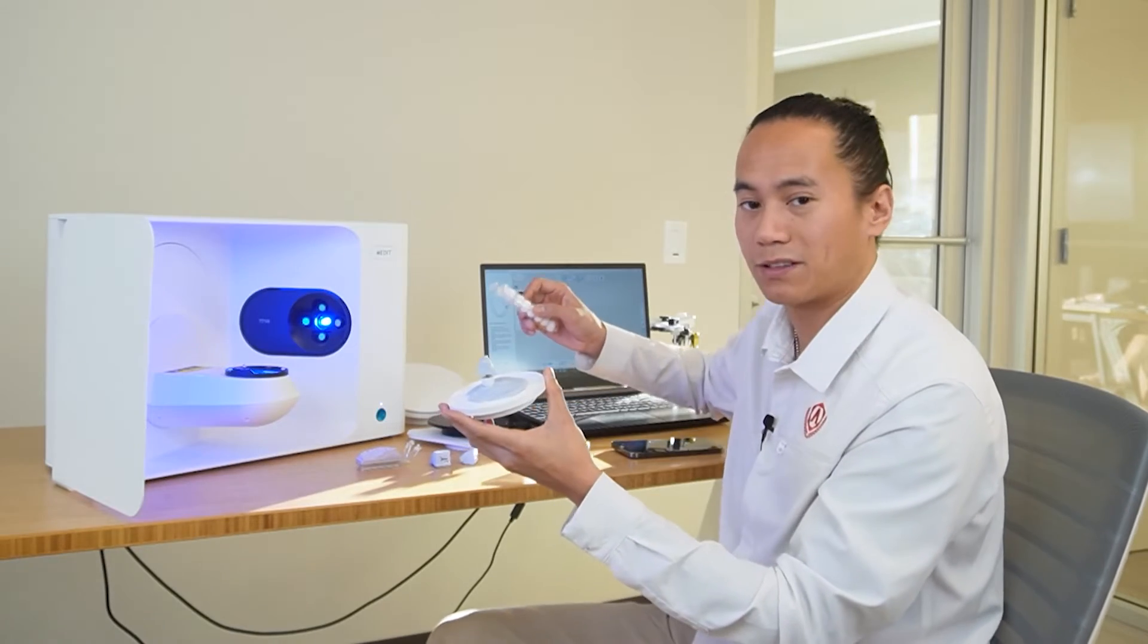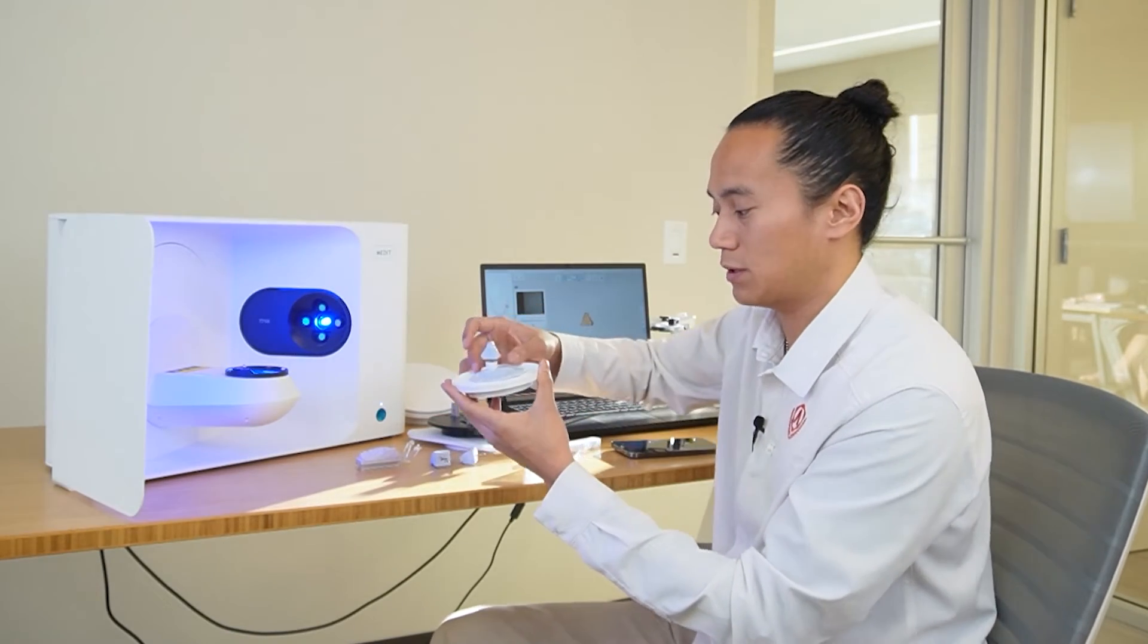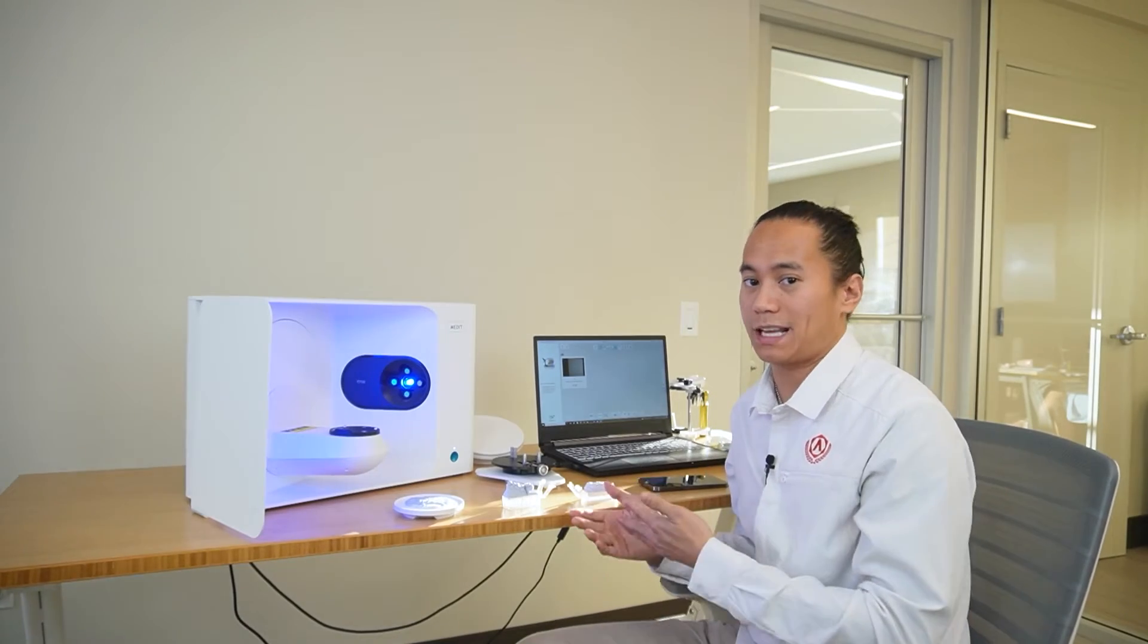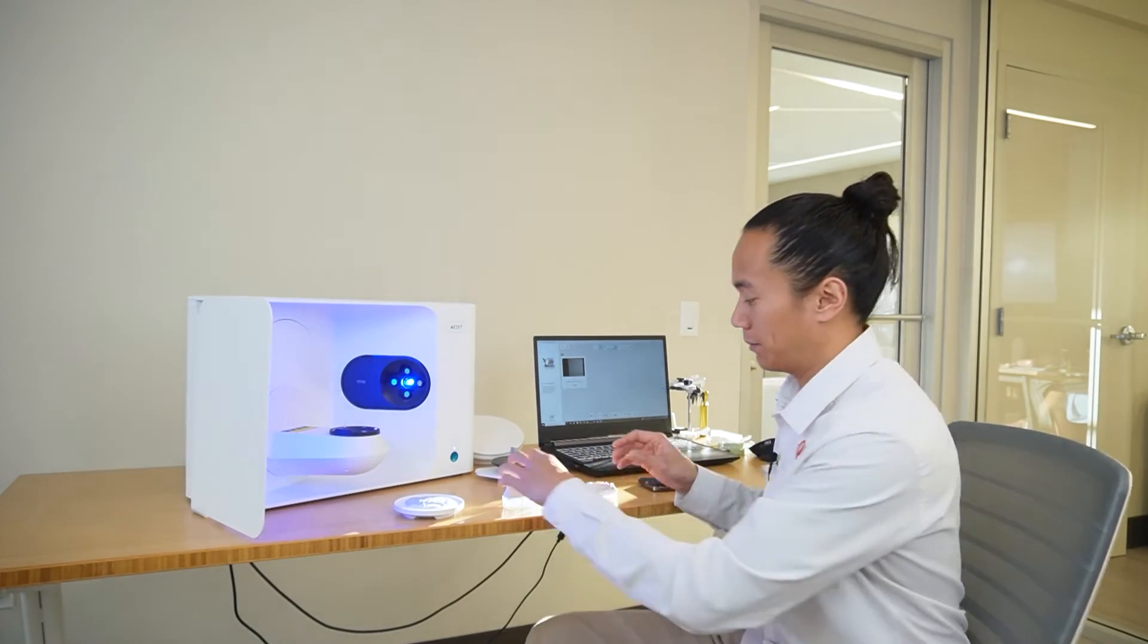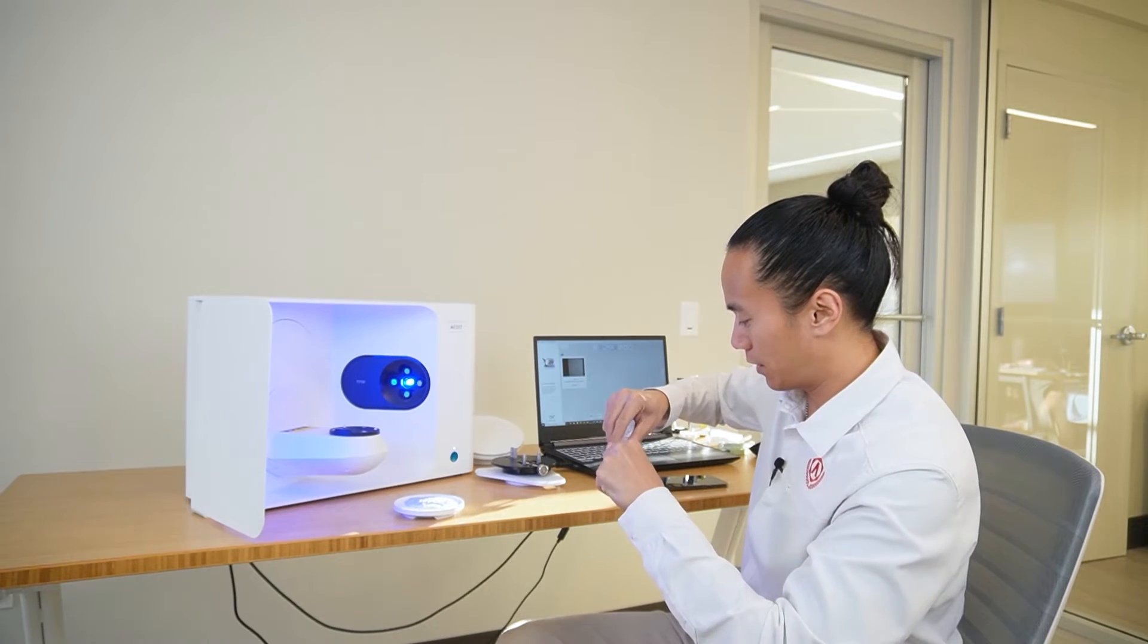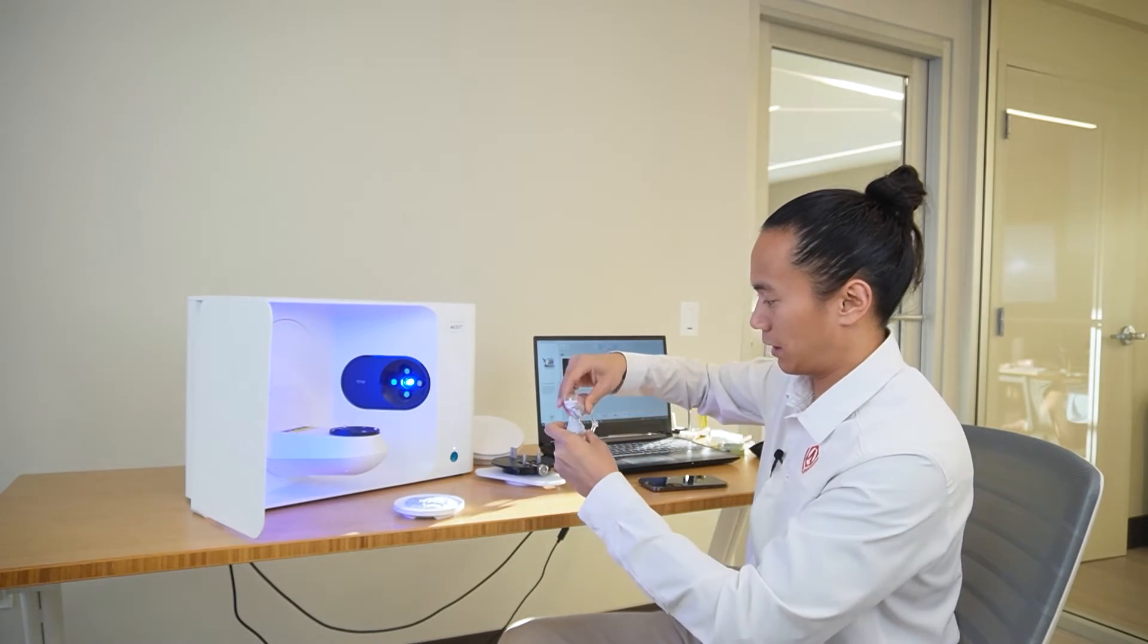Now again, if you don't have the die holders handy, you can always just use an excess amount of blue putty as well. The last step in any scan process is to scan in your bite. For this specific quadrant, we'll place our articulator back together. Just like that. Now note, we're just going to use the same plate that we've been using with the putty.